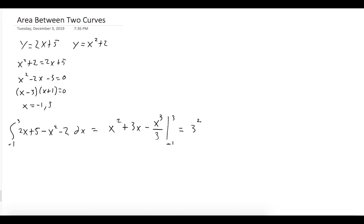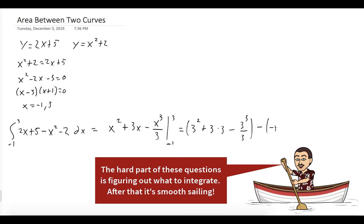So we get 3 squared plus 3 times 3 minus 3 to the third over 3. And all that is minus what you get when you plug in negative 1.